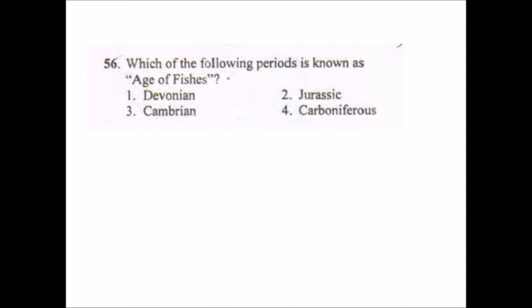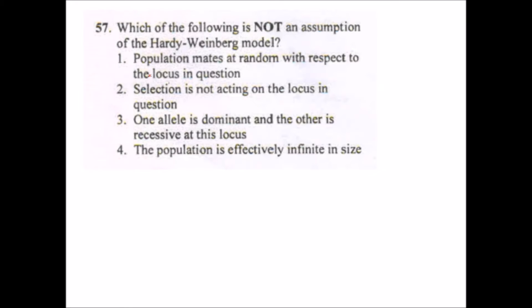Temperate grassland has the highest root to shoot ratio and the tropical dry forest has the lesser one. Next question needs no explanation - it is from the evolution chapter. Eusthenopteron is from the Devonian period, definitely you all know about this.